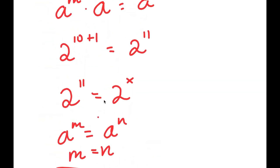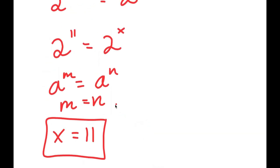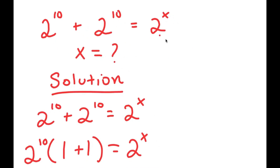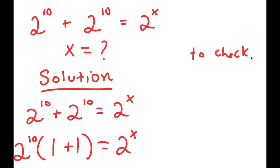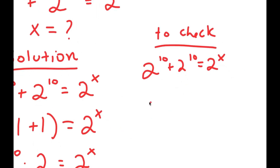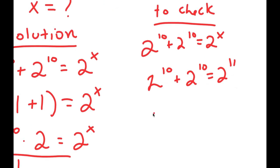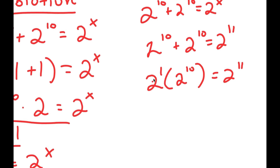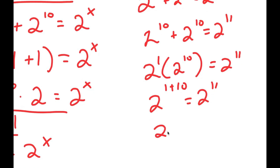Method 1 is actually much simpler — it only took a couple of steps compared to method 2. Now the final step we always have to do is check our answer. Our equation was 2 to the power of 10 plus 2 to the power of 10 equals 2 to the power of x, and we got x equals 11. So 2 to the power of 10 plus 2 to the power of 10 equals 2 times 2 to the power of 10, which equals 2 to the power of 1 plus 10, which is 2 to the power of 11. ✓